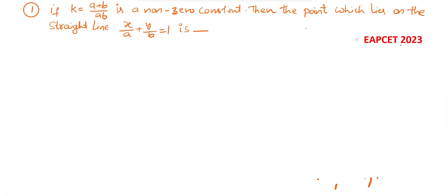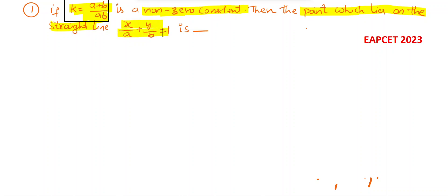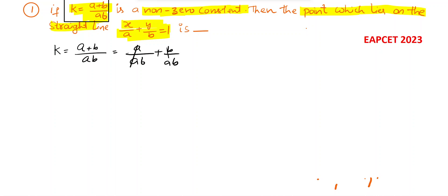This is the first question from MSet 2023. Here k is equal to (a+b)/ab, this value is given as a non-zero constant. Then the point which lies on the straight line x/a + y/b = 1 is to be found. The k value is written as a/ab + b/ab, where terms cancel, giving k = 1/a + 1/b.